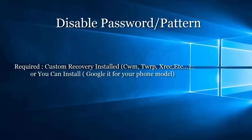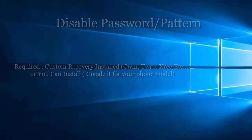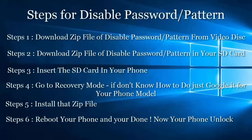If you want to disable the password or pattern without losing data, your phone must have custom recovery installed, or you need to install it. We need custom recovery because most Android phones fail to install programs from external SD card. In this method, we need to install the password disable zip file on the SD card and then install that zip file on our phone. If you successfully installed the password disable zip file on your phone, you don't need to install custom recovery. But if it fails, then you need to install custom recovery.